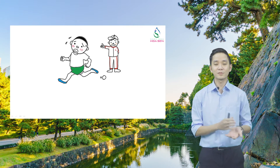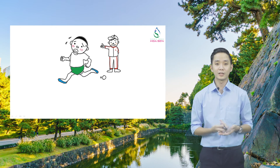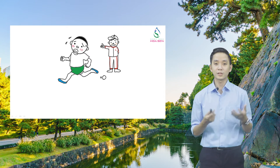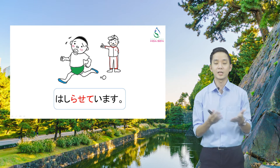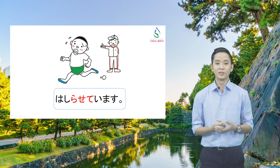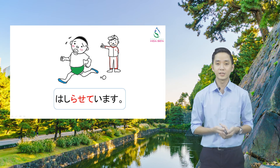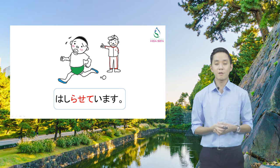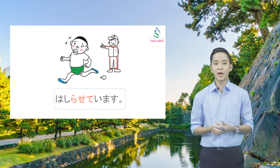Các bạn nhìn thấy các bạn học sinh này — người thầy đang bắt các bạn học sinh làm gì? Đúng rồi, chạy! Chúng ta có động từ chạy là gì? Đúng rồi, chúng ta sẽ chia sang thể khả năng là "hashiru," "city must" là bắt chạy đúng không các bạn? Hay thôi là đang động từ chạy thì chúng ta sẽ chia sang thể sai khiến là "hashirasemasu." Rồi chúng ta sẽ có mẫu câu gì nào? Đúng rồi, người thầy bắt học sinh chạy đúng không các bạn?